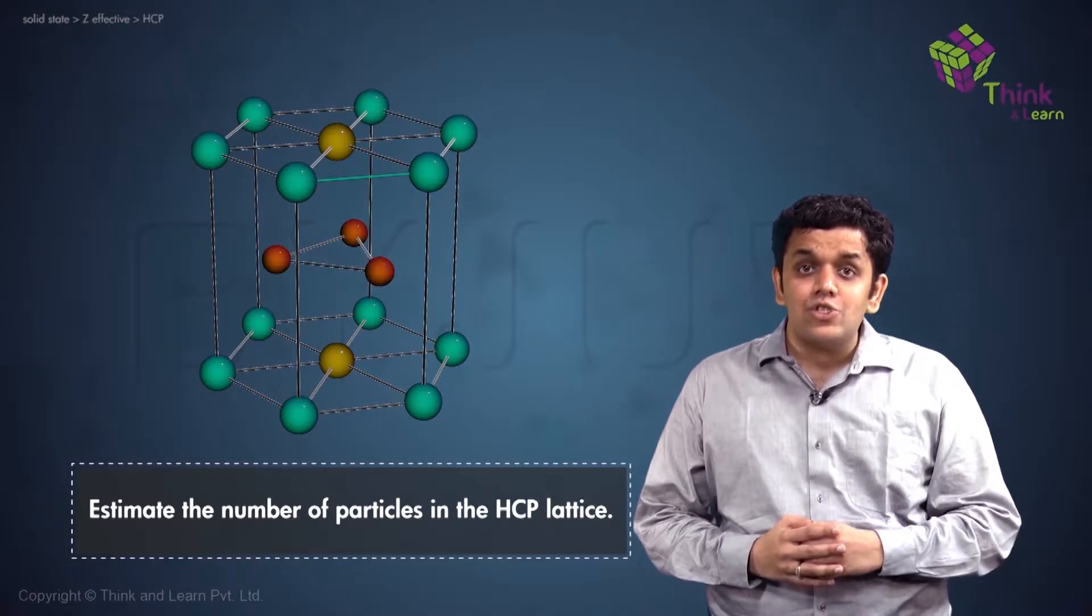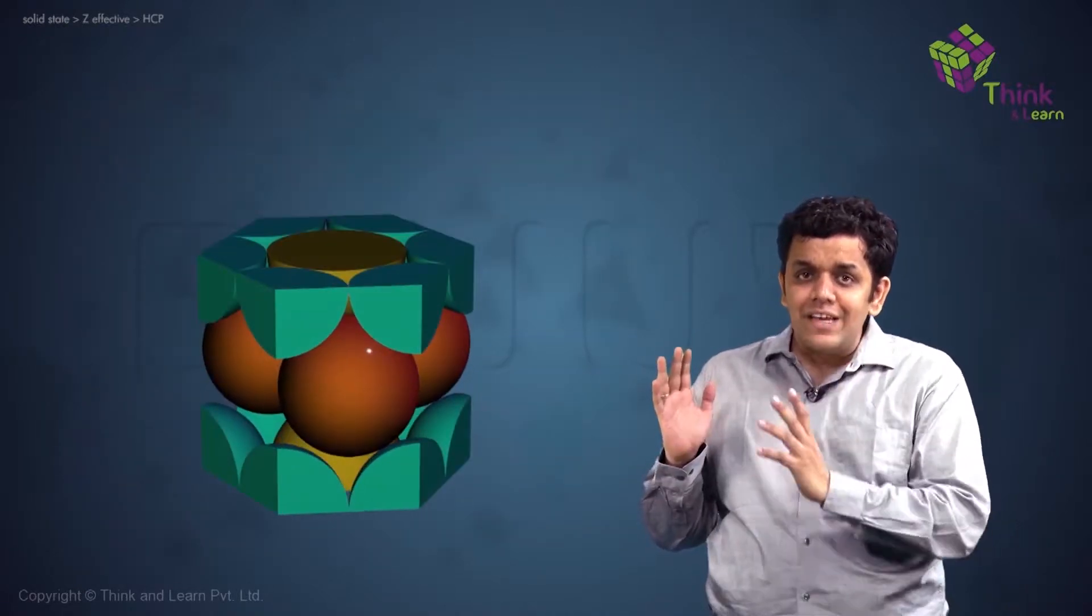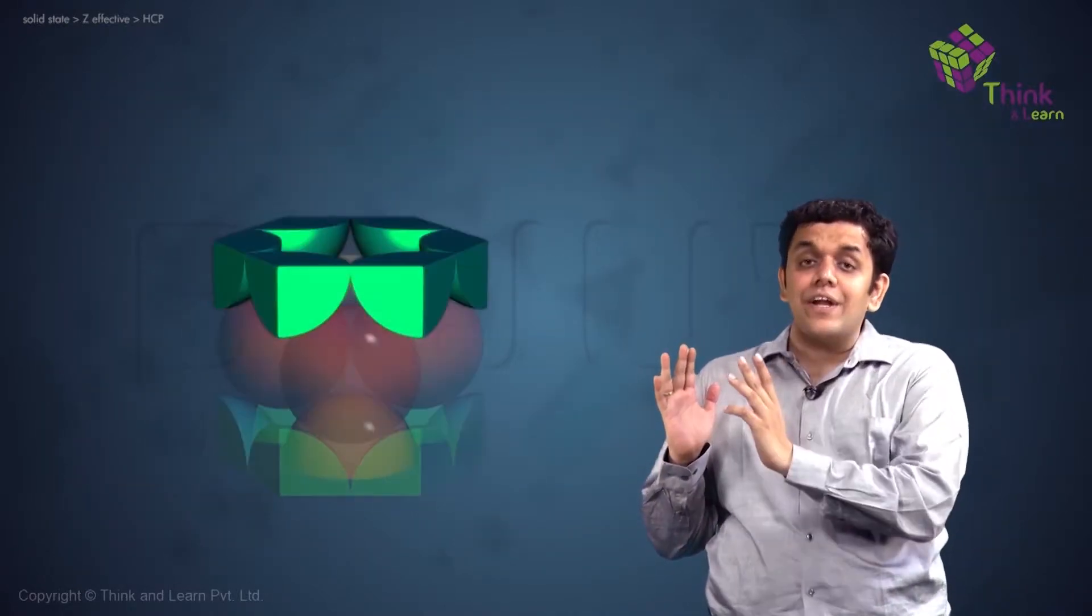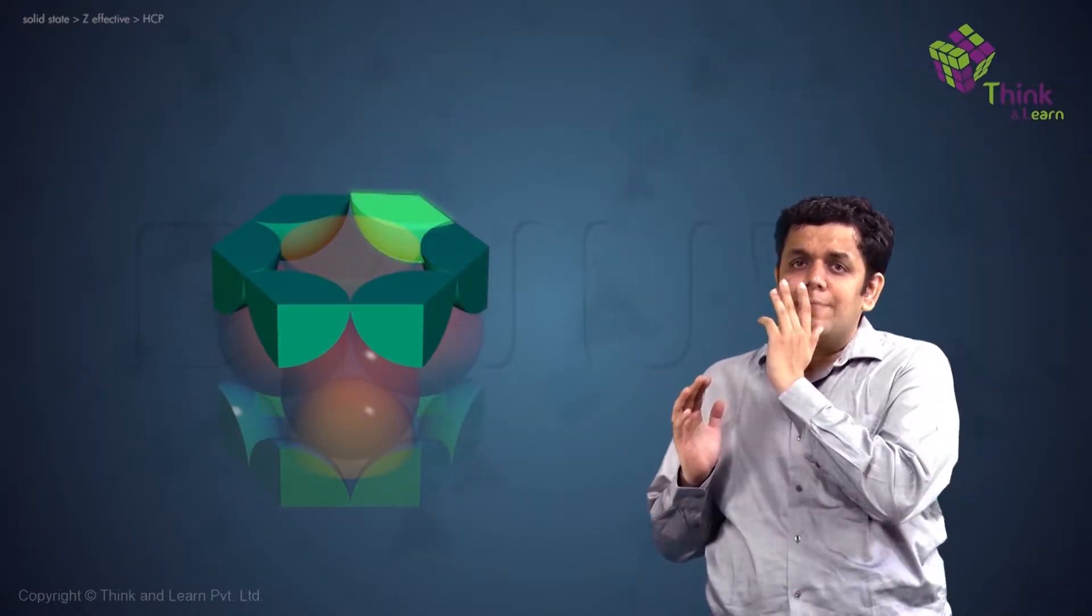Now, let us try and solve this together. Firstly, let us look at the particles located at the six corners of the top face of the hexagon. Let us take one such particle, say particle P.